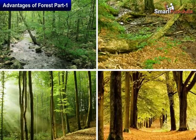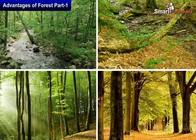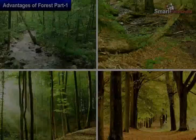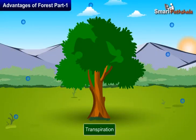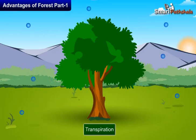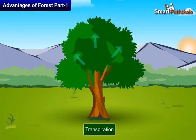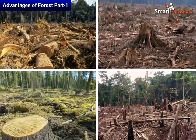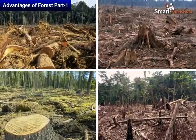Forests have many trees, and these trees take in water from their roots and release water vapor into the air through evaporation. This results in formation of clouds in the sky, which in turn results in rainfall. This is a part of the water cycle.